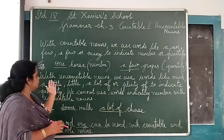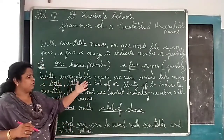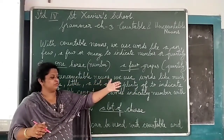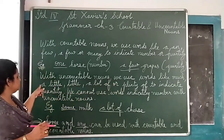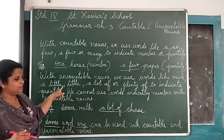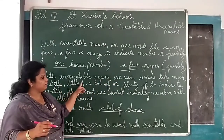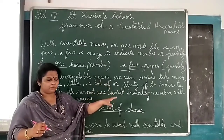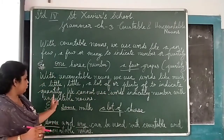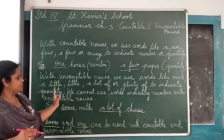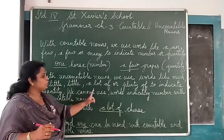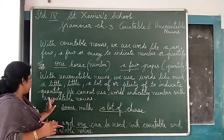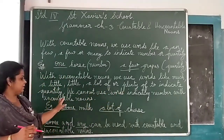And with uncountable nouns, we use words like 'much', 'a little', 'little', 'a lot', or 'plenty of' to indicate quantity. We cannot use words indicating number with uncountable nouns. Okay children?